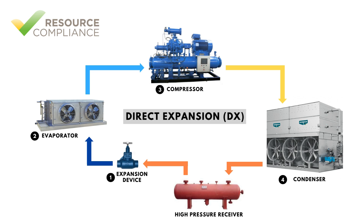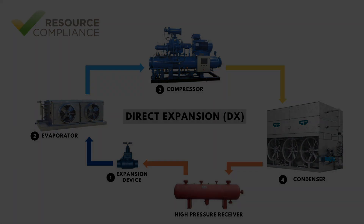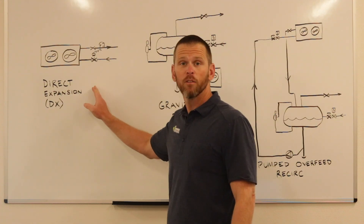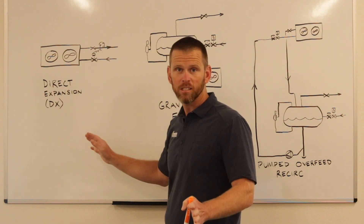The vapor that forms is called flash gas and is unwanted, since the vapor must travel through the evaporator but has no potential to absorb latent heat. The beauty of the DX system, however, remains its simplicity.